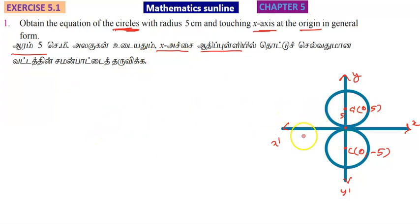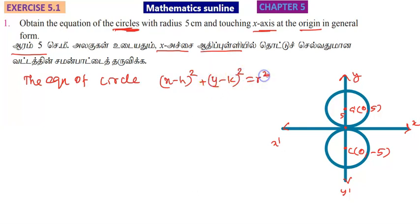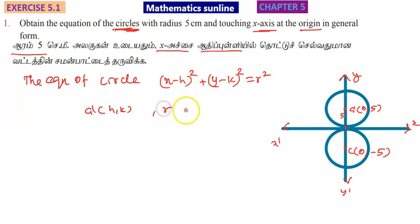So we have 2 circles. The standard form formula for a circle is: x minus h, the whole square, plus y minus k, the whole square, equal to r squared. Here r is the radius, and h, k is the center point.